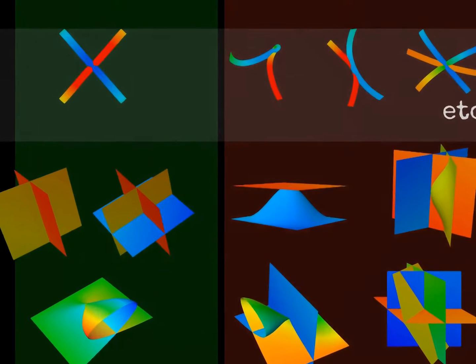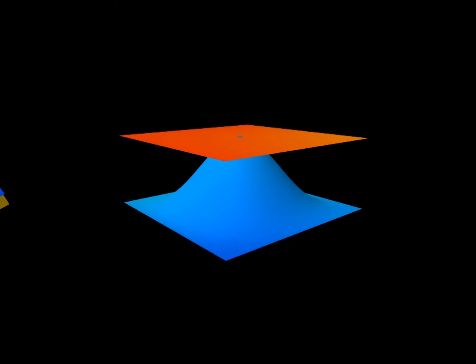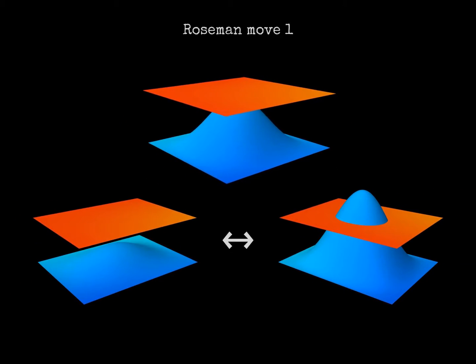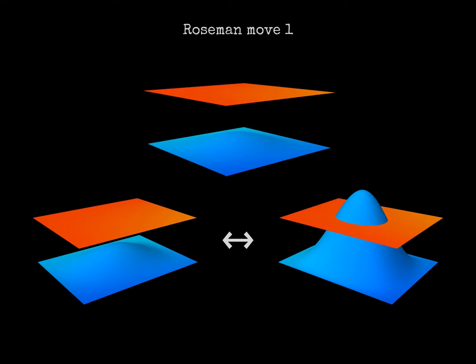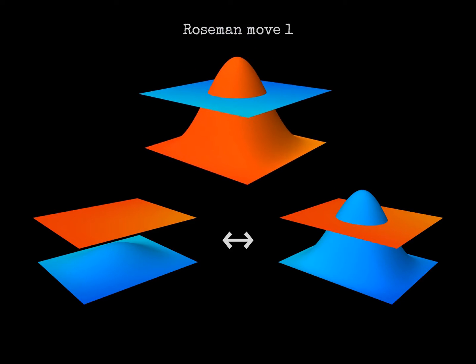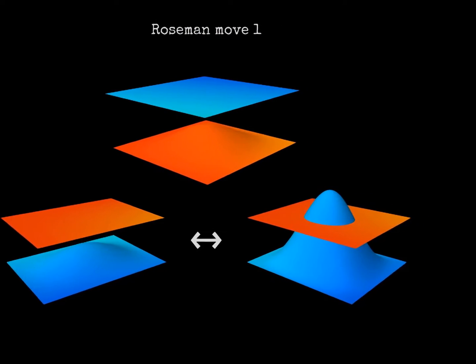Also in this case we can use the simplest singularities to derive moves for surface diagrams. Here is an example. A piece of surface intersects another one in only one point. We can pull the surfaces apart so that they do not intersect at all, or we can push one through the other so that they intersect in a whole circle of points. These two surface tangles can replace each other without changing the type of knotted surface in four space. The same move may appear rotated or reflected. This is the first of the so-called Rosemann moves, the analogs of the Reidemeister moves.